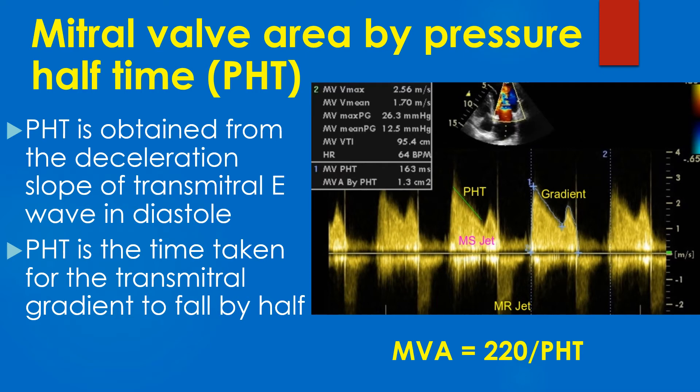In mitral stenosis there is no diastasis. The E wave merges with the A wave, or there is E-A fusion. The green cursor measures the PHT of the mitral stenosis jet.